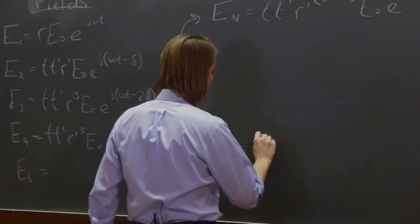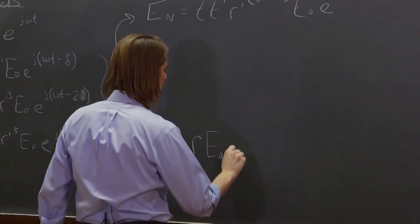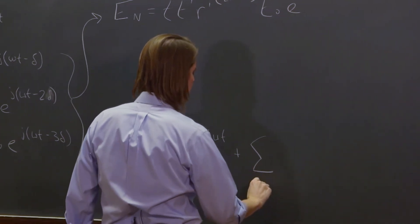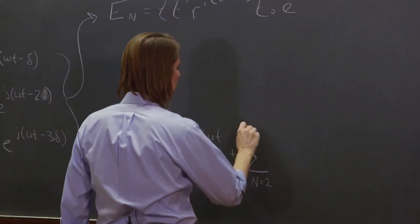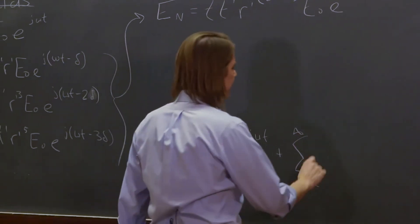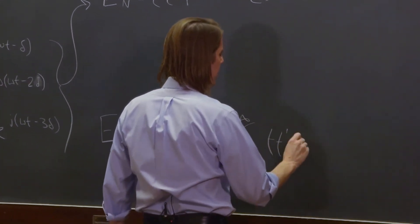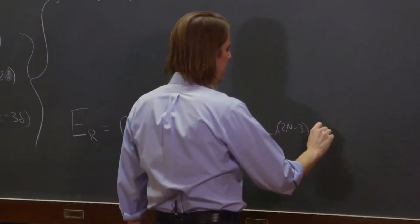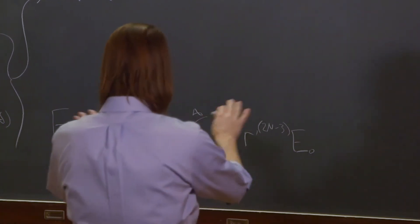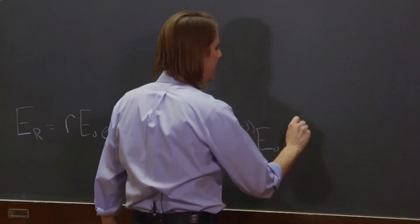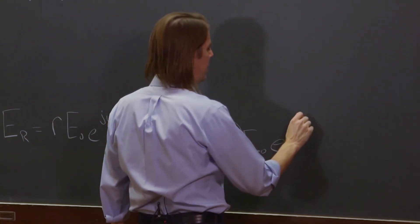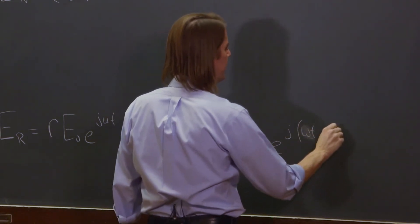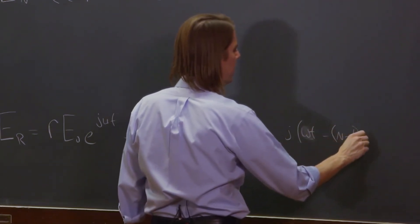Well, we just add them. So it's R, E naught, E to the J omega T plus the sum for big N equals two to infinity of T, T prime, R prime to the two n minus three, E naught, E to the J omega T minus n minus one delta.